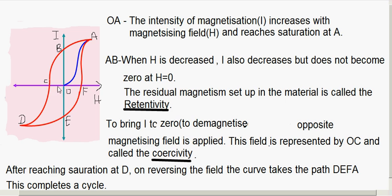When H is reversed and increased in the reverse direction, at one particular point I reaches saturation again — at point D. Upon reaching D, if you increase H in the opposite direction again, the curve follows the path D-E-F-A, closing at point A. So the graph O-A-B-C-D-E-F-A represents one complete cycle of magnetization and demagnetization, and this is called the hysteresis loop. The lag of intensity of magnetization behind the magnetizing field during magnetization and demagnetization of the ferromagnetic specimen is called hysteresis.